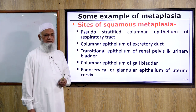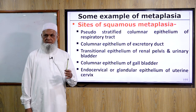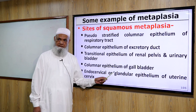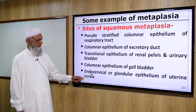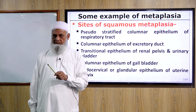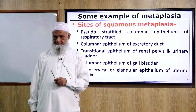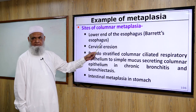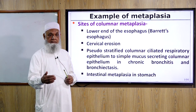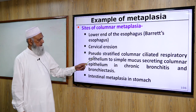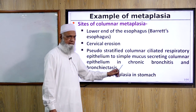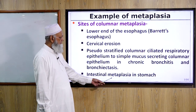Gallbladder stones or any chronic inflammation cause columnar epithelium to be replaced by squamous epithelium — squamous metaplasia. Long-continued acid pH within the cervix causes columnar epithelium to be replaced by squamous epithelium. Sites of columnar metaplasia include the lower end of the esophagus (Barrett's esophagus), cervical erosion where endocervical cells gradually cross over the squamous epithelium, pseudostratified columnar ciliated respiratory epithelium changing to simple mucous secretory columnar epithelium in chronic bronchitis and bronchiectasis, and intestinal metaplasia in the stomach.